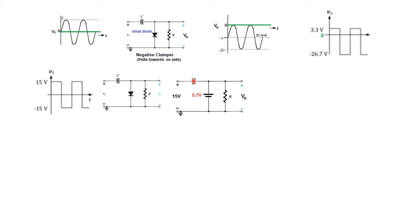When the input signal is positive, the diode will be forward biased. For the forward biased condition, we represent it as a 0.7 volt battery — the barrier potential. Now let's try to plot the output.